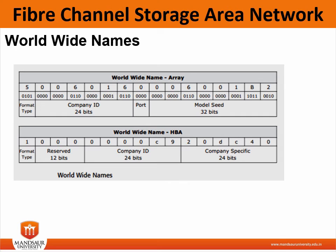For the array, there is a 32-bit model field and a 4-bit port field, making 36 bits. Additionally, there is a 24-bit company ID and a 4-bit format type field. Together, 32 plus 4 plus 24 plus 4 gives the 64-bit Worldwide Name structure for an array.